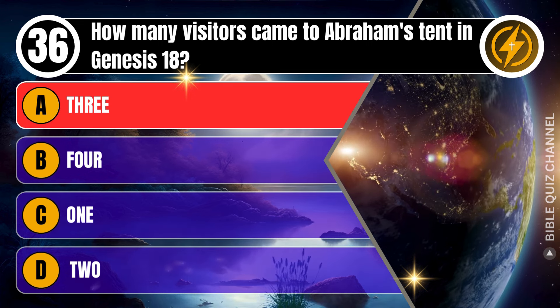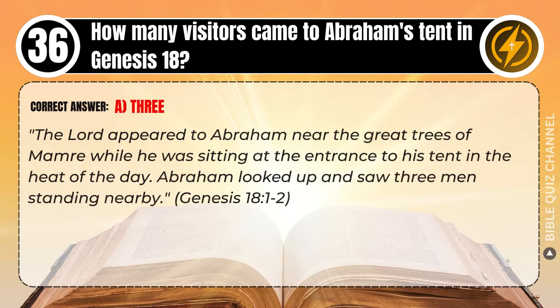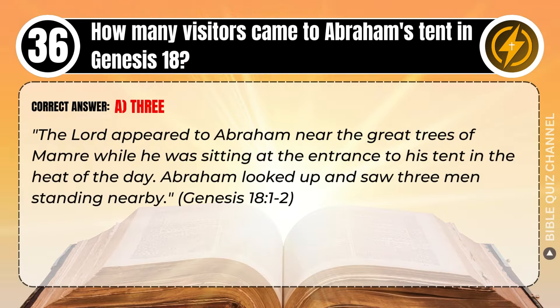Correct answer: A. 3. Explaining the Bible — The Lord appeared to Abraham near the great trees of Mamre while he was sitting at the entrance to his tent in the heat of the day. Abraham looked up and saw three men standing nearby. Genesis, chapter 18, verse 1-2.